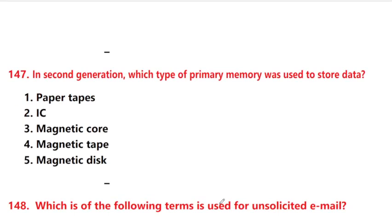In second generation computers, which type of primary memory was used to store data? Answer is option 4: magnetic tape.